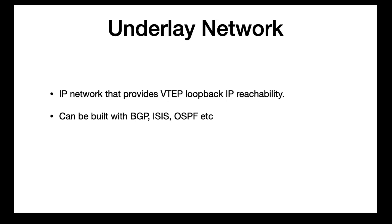Next, we'll talk about the underlay network. This is simply an IP network that exists to provide VTEP loopback IP address reachability. This can be built using any routing protocol of choice — you could use OSPF, ISIS, or BGP. BGP is a very common approach, but you don't have to use BGP; you could use any of the other IGPs as well.